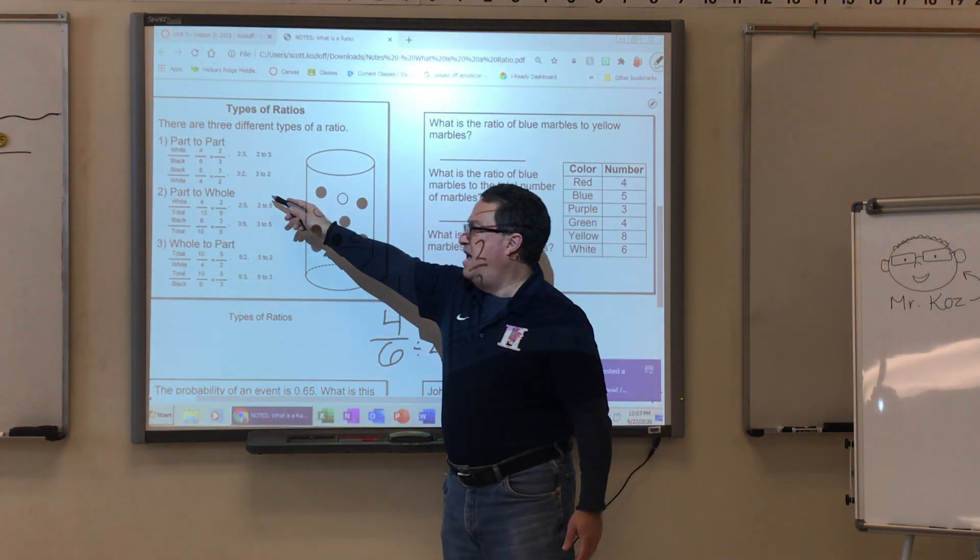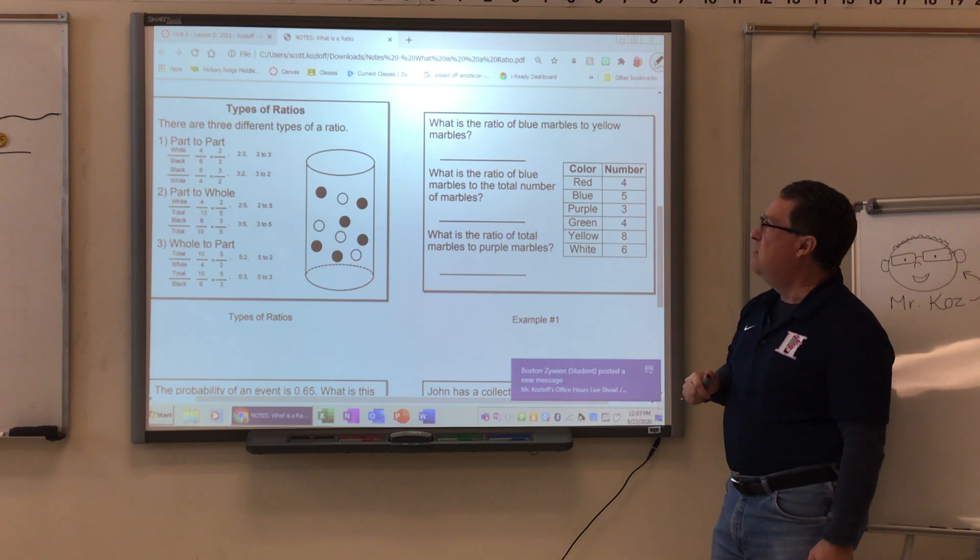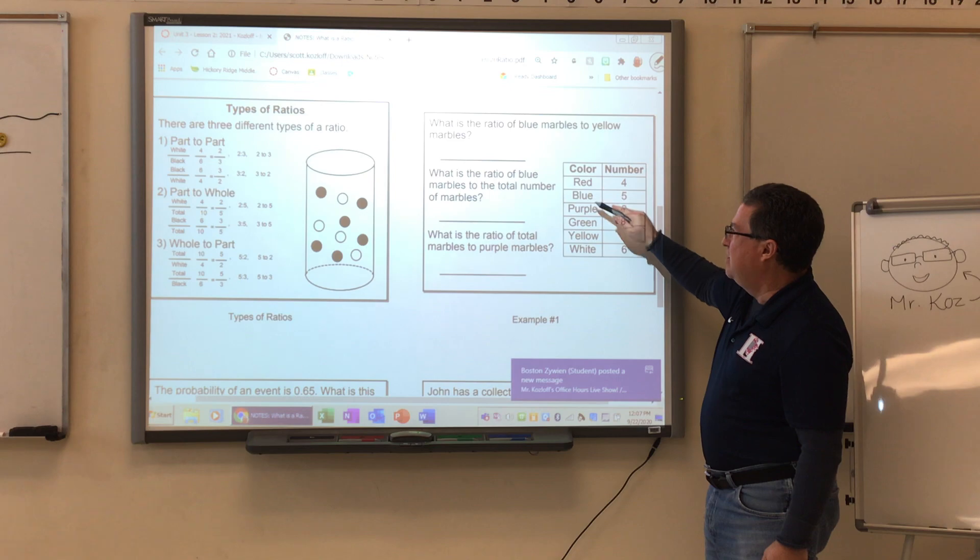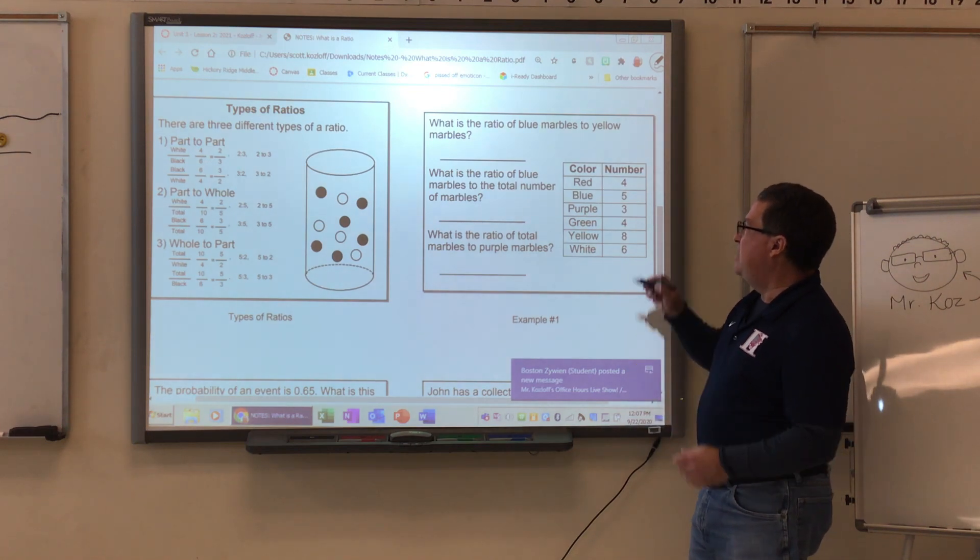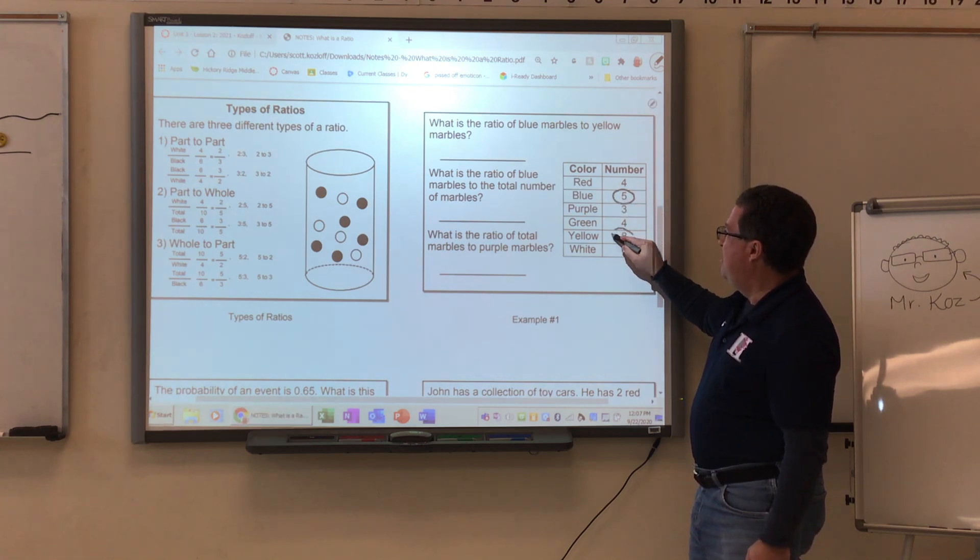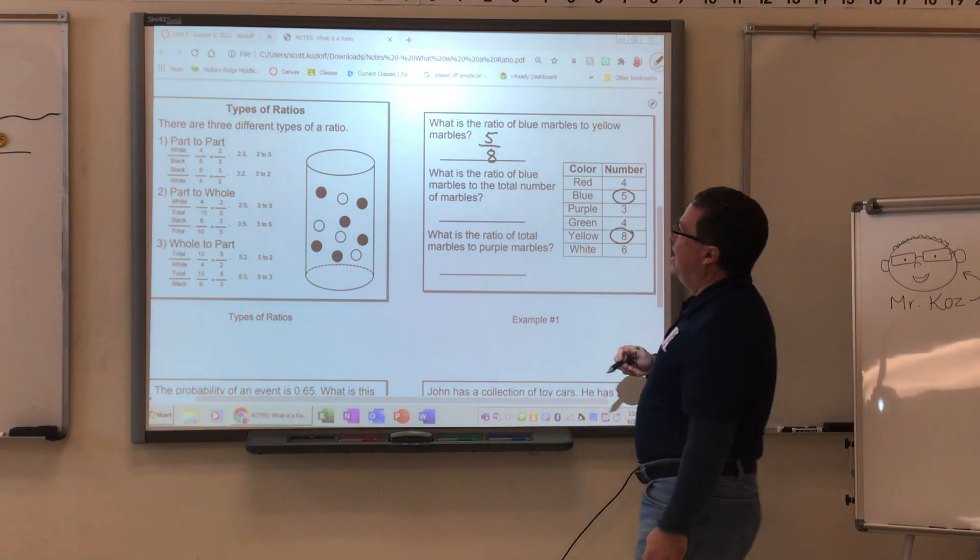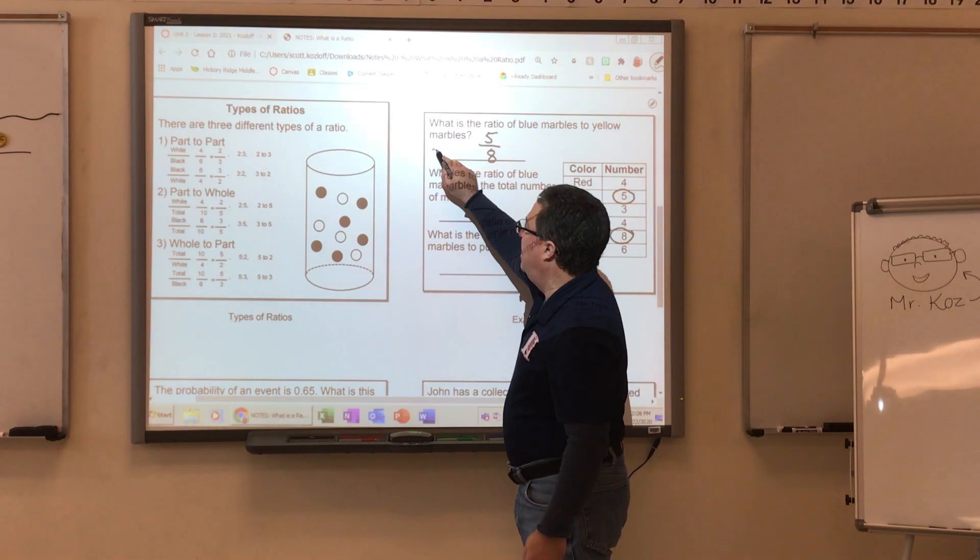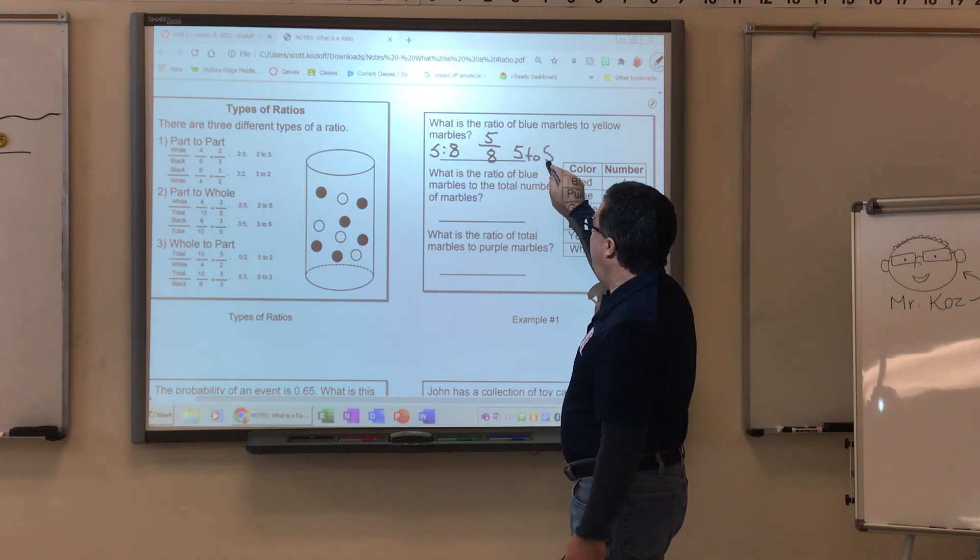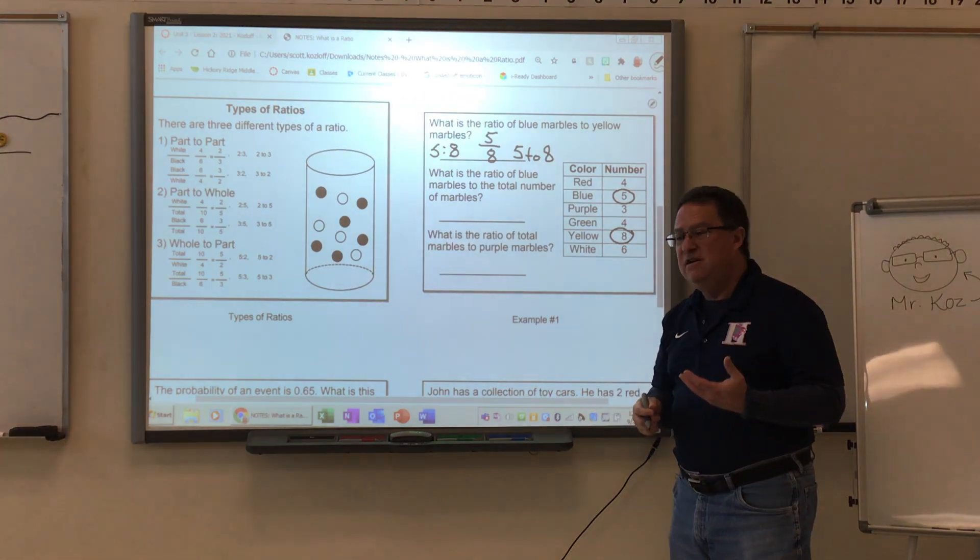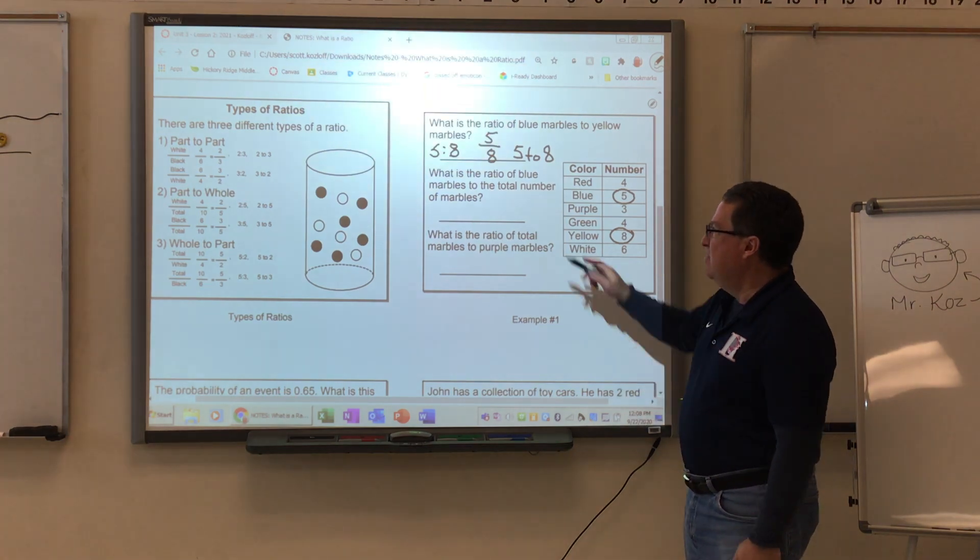So I'm going to move over to this next screen. This next screen talks about what is the ratio of blue marbles to yellow marbles. And here are all the colors: there's a red, a blue, a purple, a green, a yellow, and a white. The question though is what is the ratio of blue marbles to yellow marbles. Here is the blue marble. Here is the yellow marble. So I'm going to put the blue marble on top. I'm going to put the yellow marbles on the bottom. That is a part to part question. For our purposes, when we use forms and when we ask you to give us the answers, the best way to write that is in a fractional form unless you're asked to do otherwise.